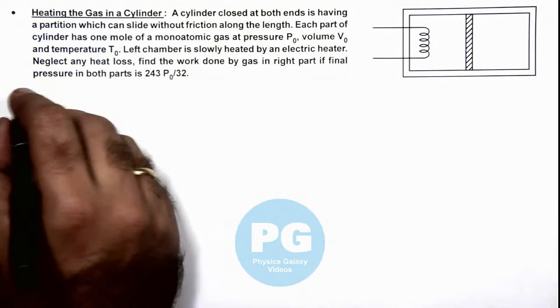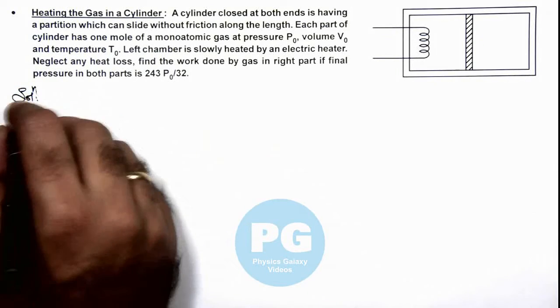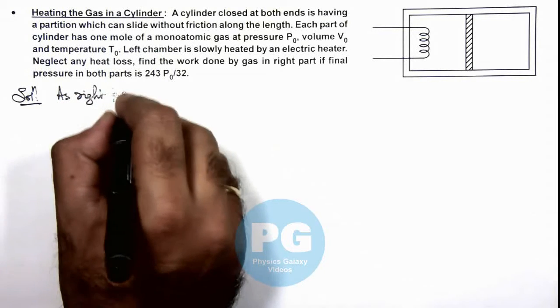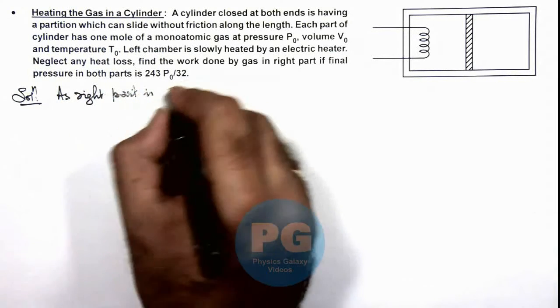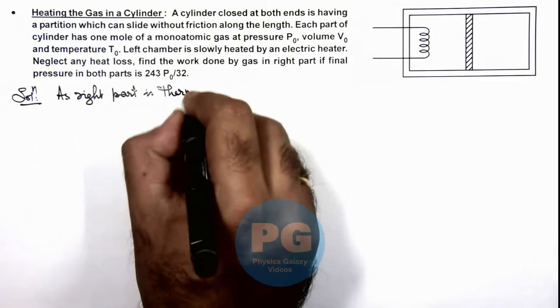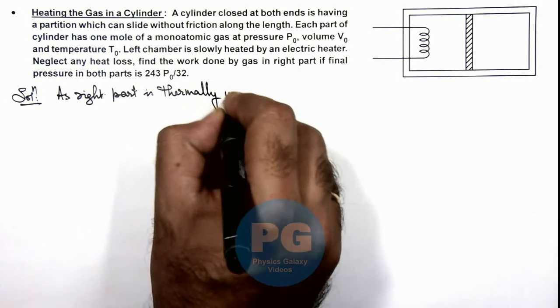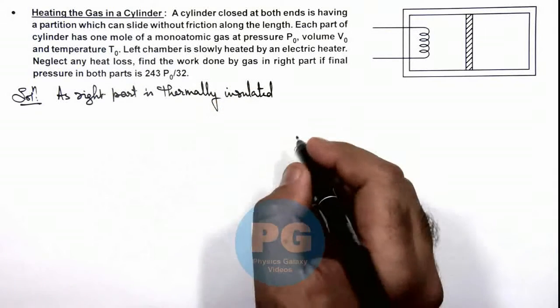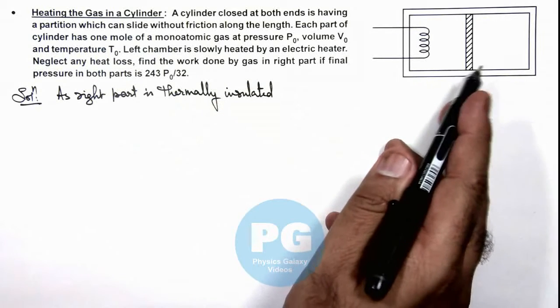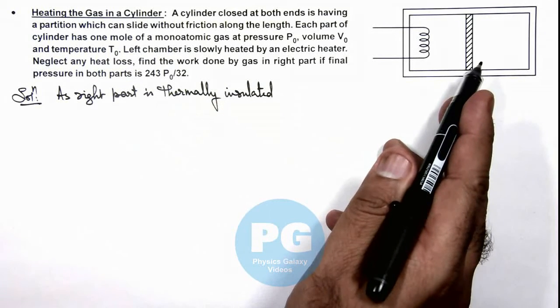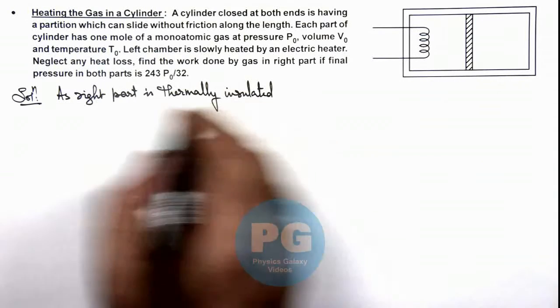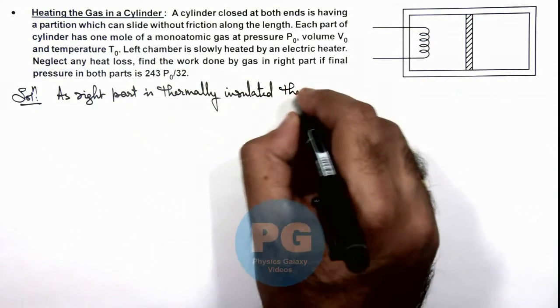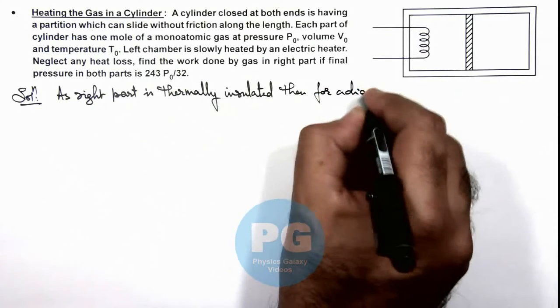So here we can directly write that as the right part is thermally insulated, this implies this will be undergoing an adiabatic process. So right part is thermally insulated, then for adiabatic process...